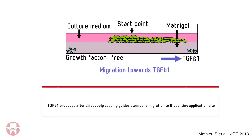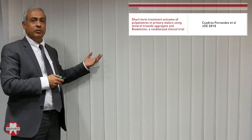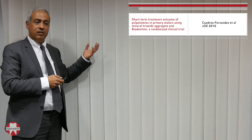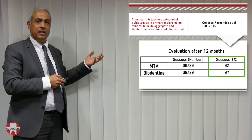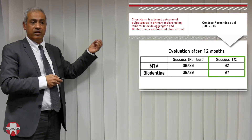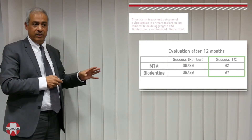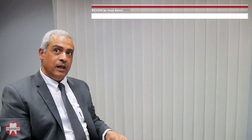Since biodentine can be applied to any surface area, it can also be used for pulpotomy. This has been shown recently: biodentine was applied in primary teeth for pulpotomy, and the success rate was very high — even higher than MTA, though the difference was not statistically significant.